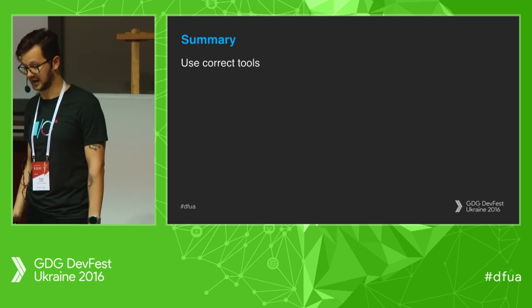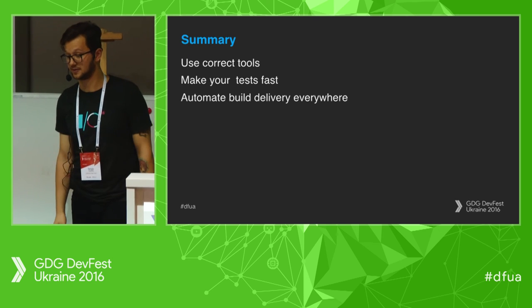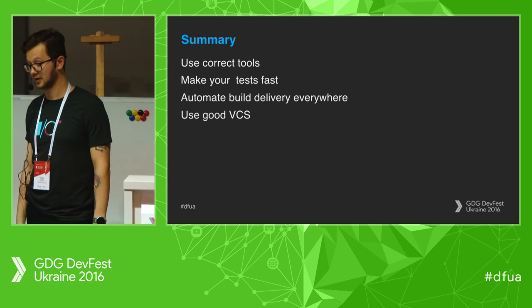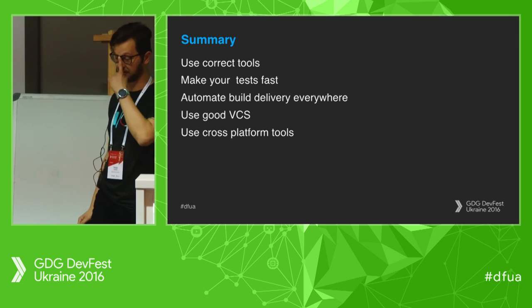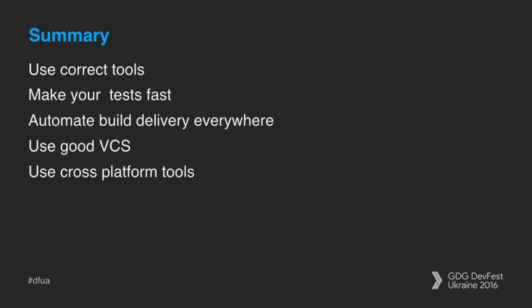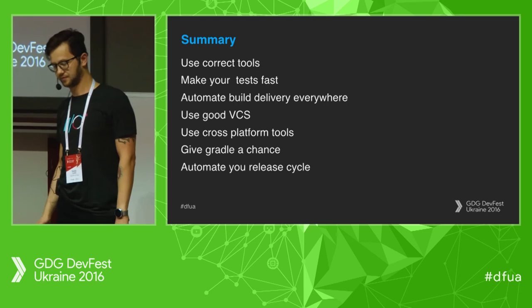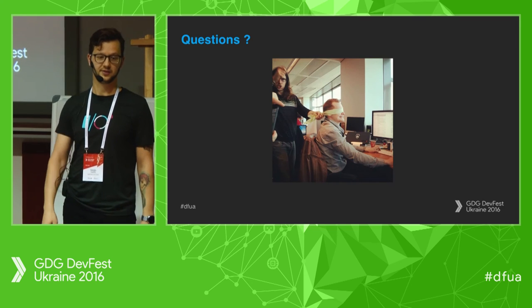Summary: use the correct tools — please don't use TFS if the whole team is on Mac. Make your tests fast, automate build delivery everywhere, use a good VCS. Use cross-platform tools — don't use .NET for Appium. Gradle has a lot of powerful tools that can help you during the CI process in your team. Automate your release cycle.